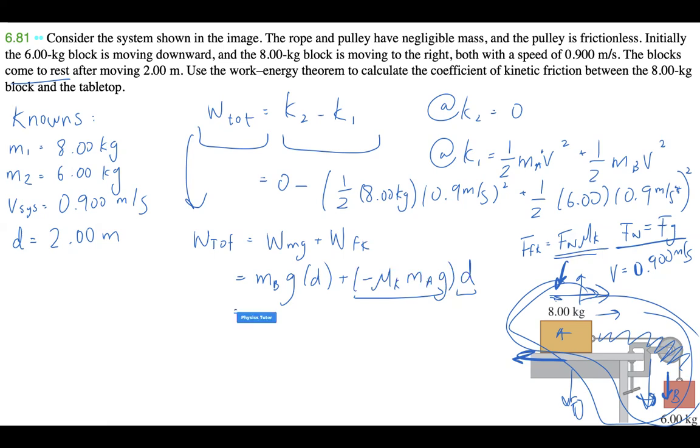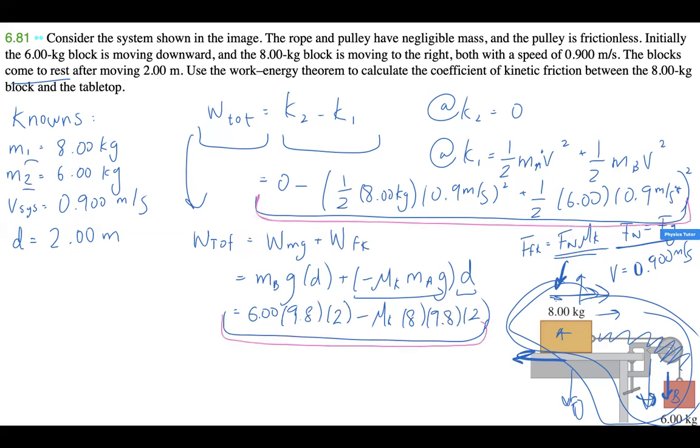We can plug in our values. This is going to be 6.00 times 9.8—ignore the units for now, you can add them at the end—times 2, minus mu_k, which we don't know, times 8 times 9.8 times 2. This is all equal to this term right over here. These two are equal to each other, so all we have to do is isolate for minus mu_k.